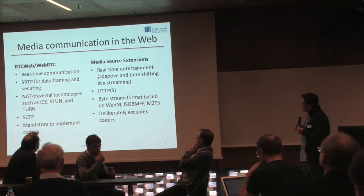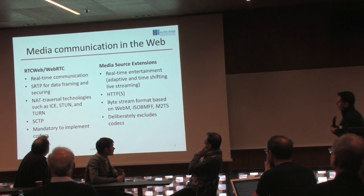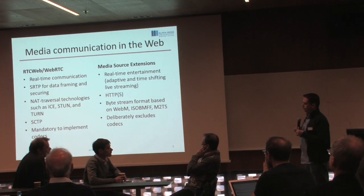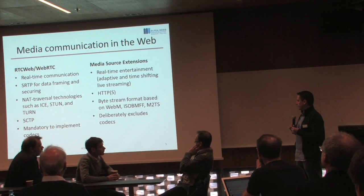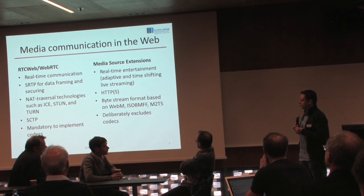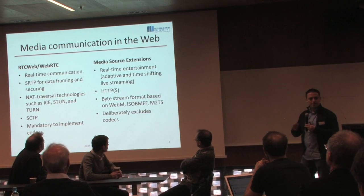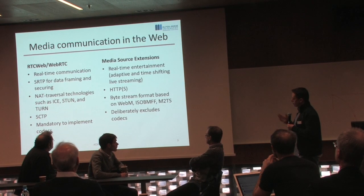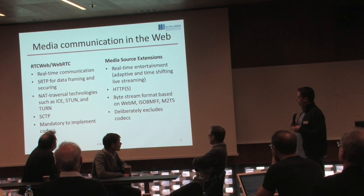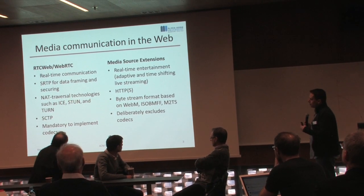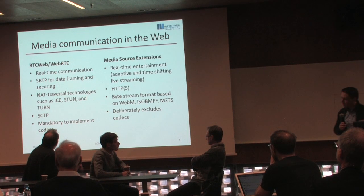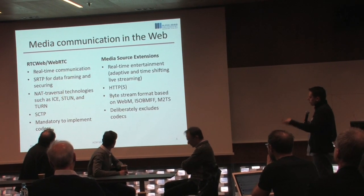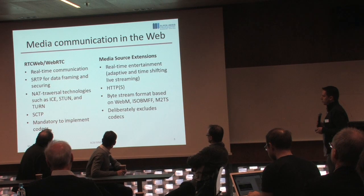Interestingly, they use different protocols and formats. The media source extensions mainly rely on HTTP or HTTPS — though typically people think HTTPS is not needed because the content is DRM-encrypted anyway. On the other side there is RTP or Secure RTP for data framing and securing. One reason why adaptive HTTP streaming became more popular was NAT issues, but it seems those have been solved, so there are different technologies where you can solve the NAT-related issues.